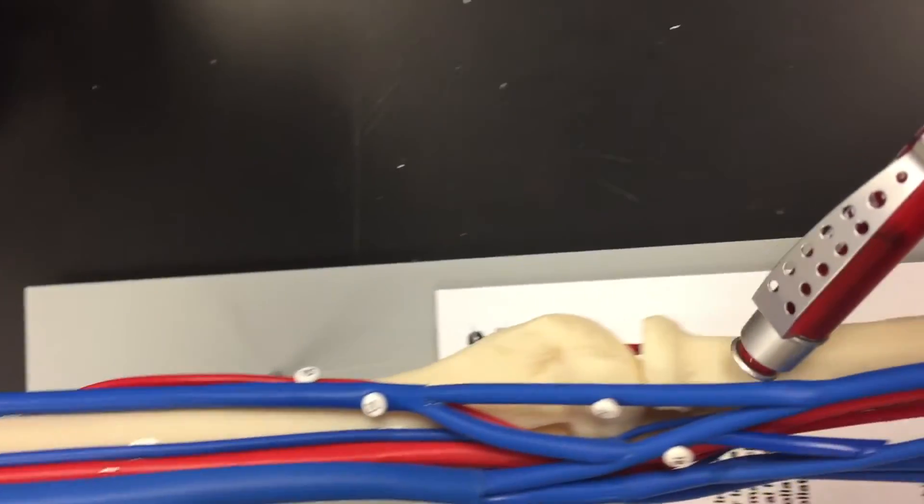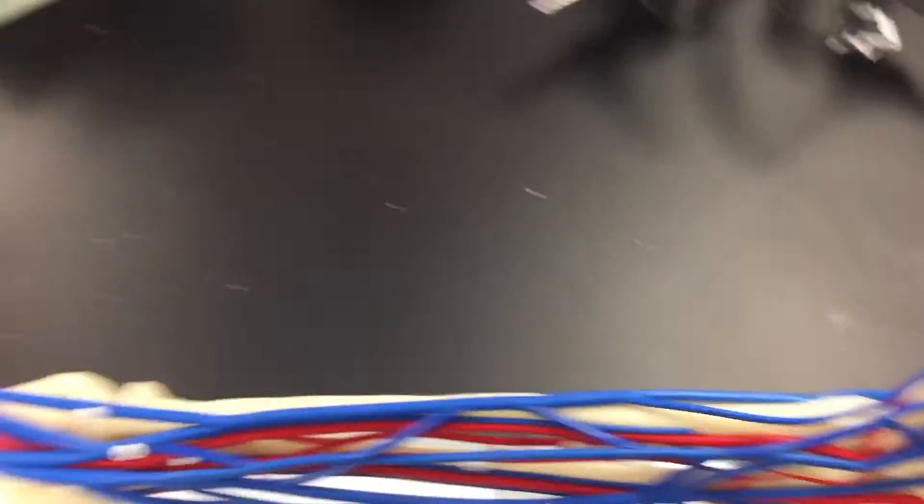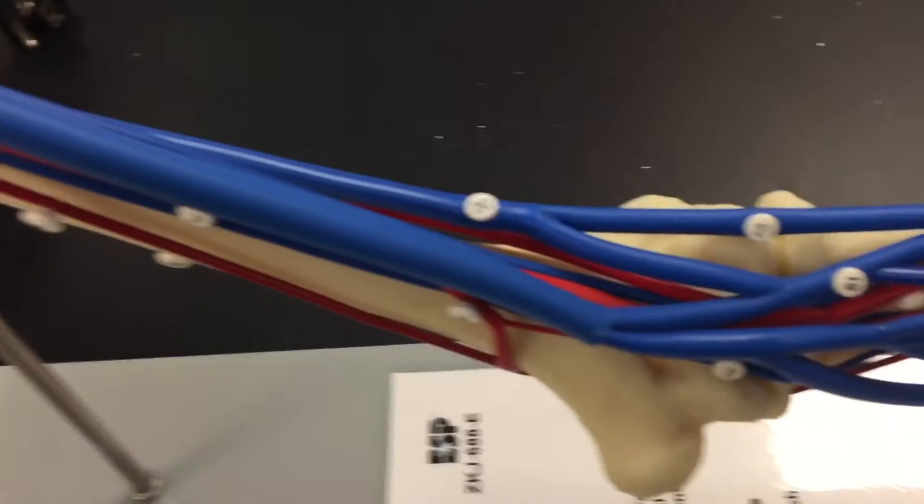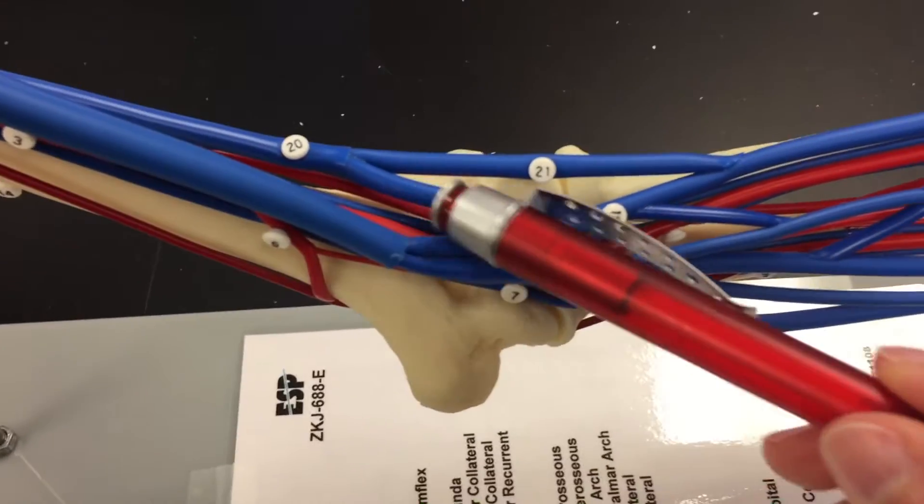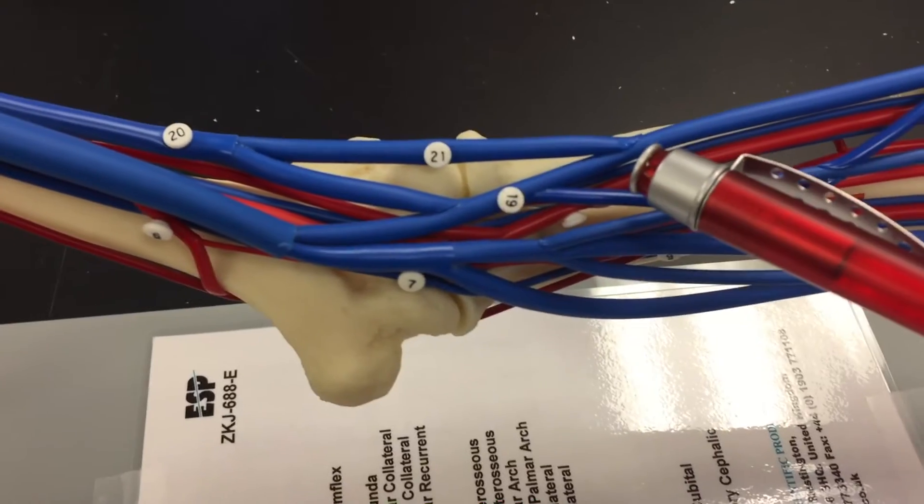And it goes all the way down. Right in the middle here, number nineteen, this is the median cubital vein.